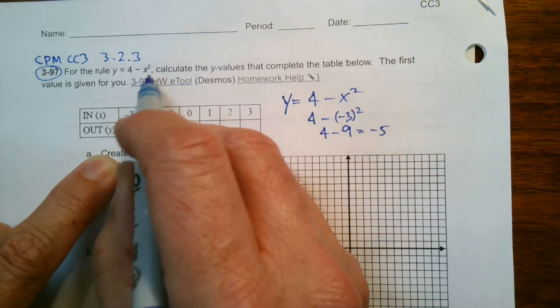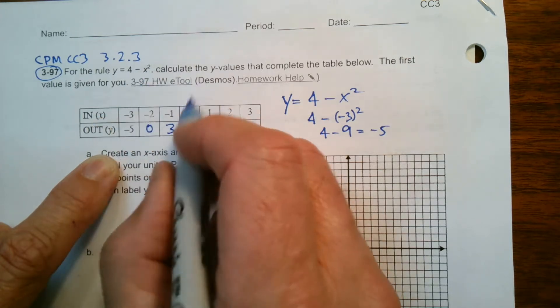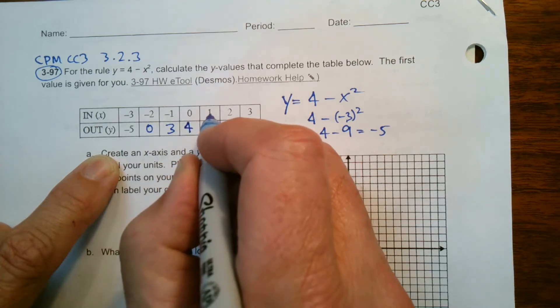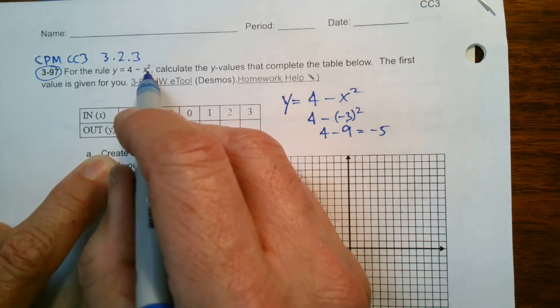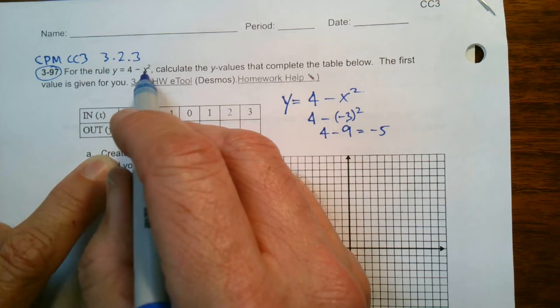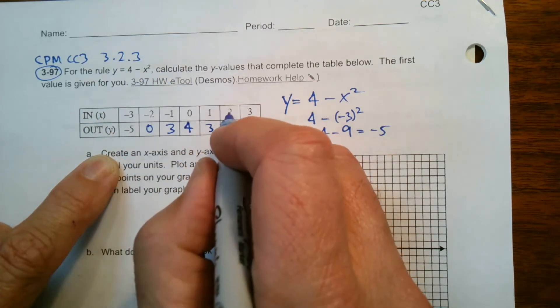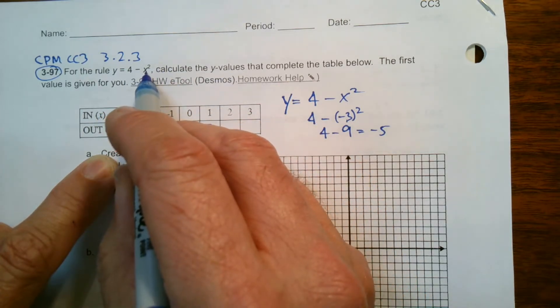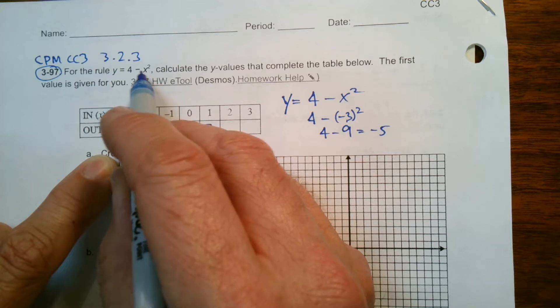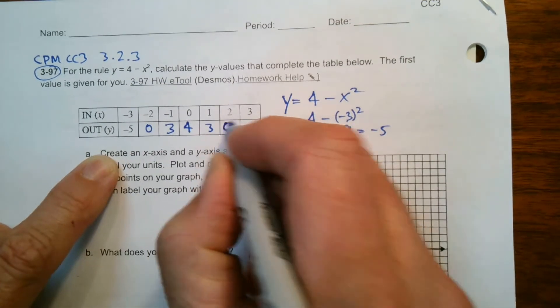Putting in a zero into X that goes to just a zero. So four minus zero is four. Put a one in, one times one is one. So then four minus one is three. Put a two in, two squared. Two times two is four. Four minus four is zero.